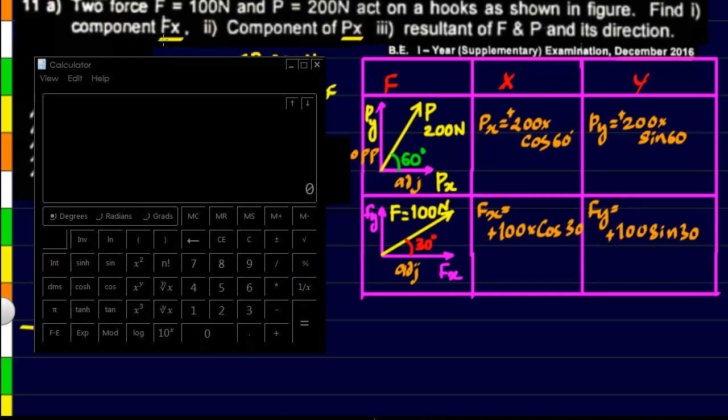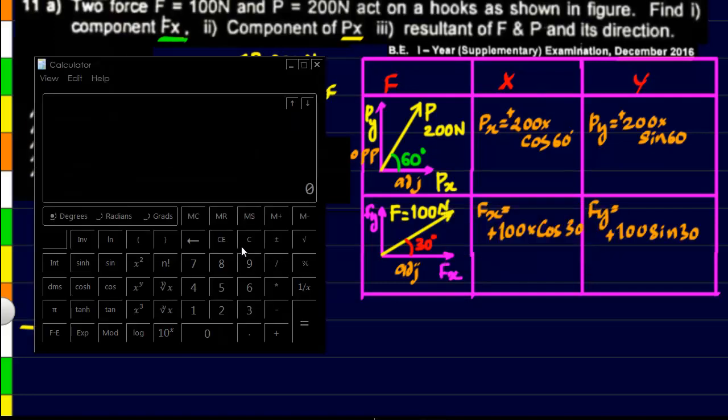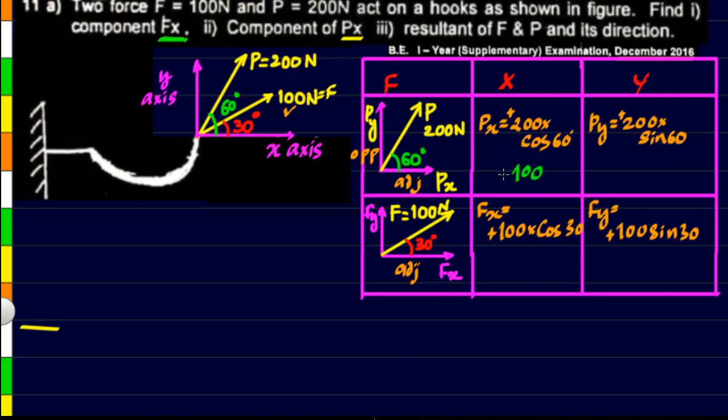Now the first answer that we want is the x component of F. So let us calculate it. So that is 200 into cos 60. So that gives us 100. So this is our first answer, that is Px. Of course the unit here is newtons so we will have to take newton here as well.